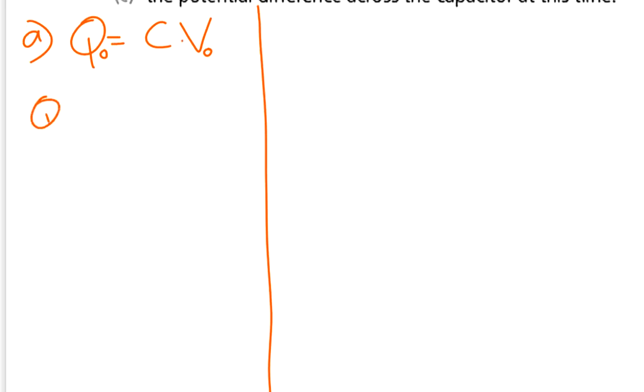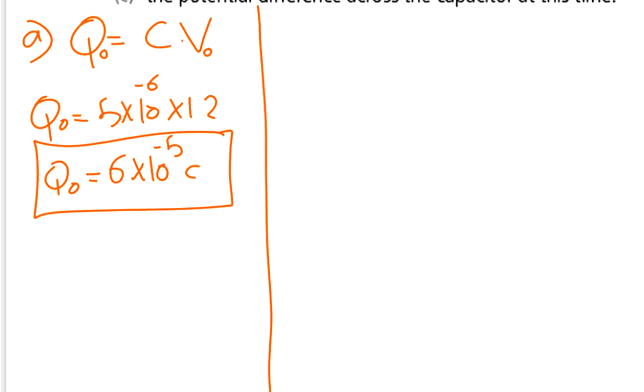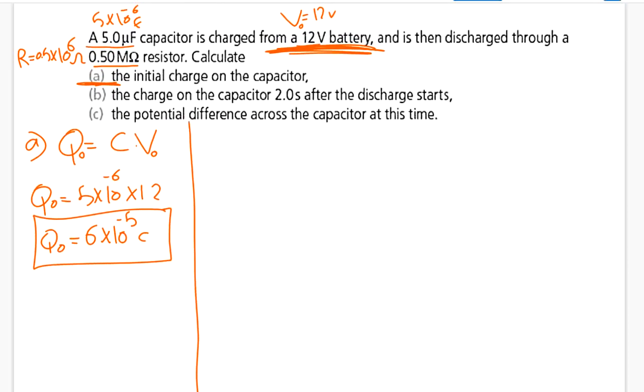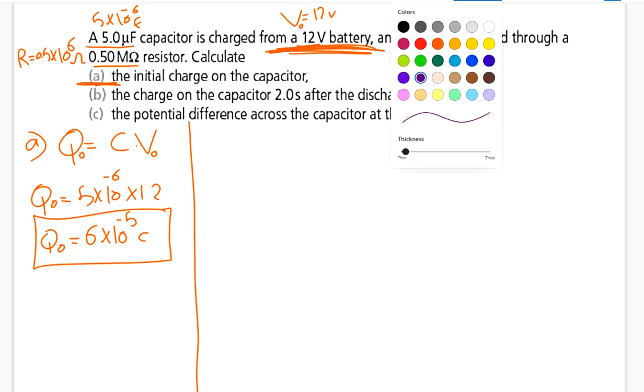Now I just substitute. The C is 5 times 10 to the power negative 6, and the V is 12. Using the calculator, the answer is 60 times 10 to the power negative 6, or you can say 6 times 10 to the power negative 5 coulombs. This is the initial charge.